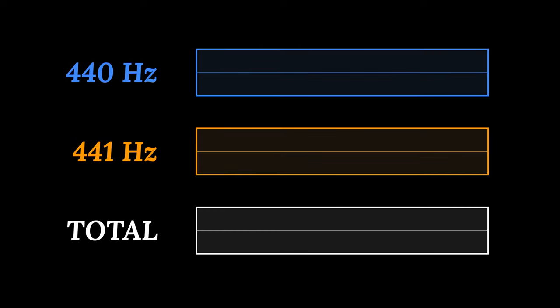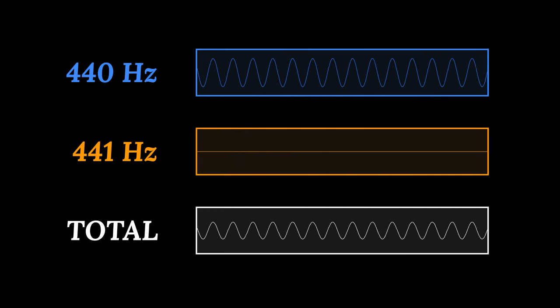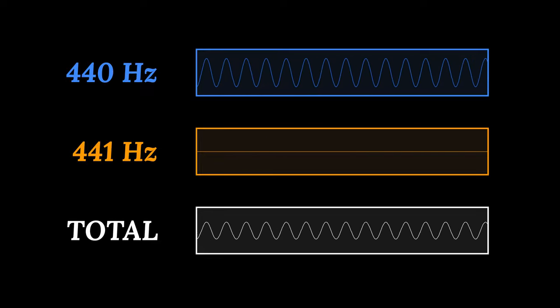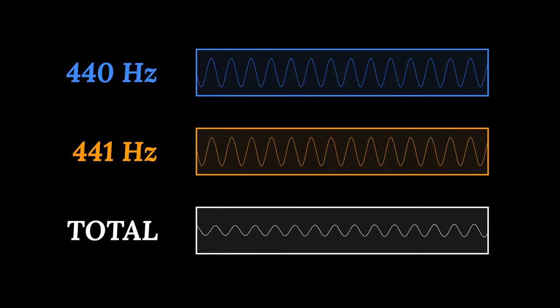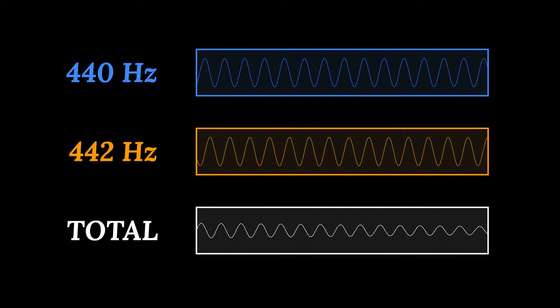But how does it make sound when the frequencies are so high? Let's play a sine wave at 440 hertz. Now let's play a sine wave at 441 hertz. The sound starts to fade in and out once a second.